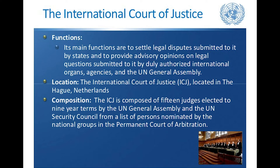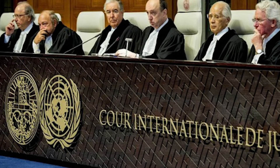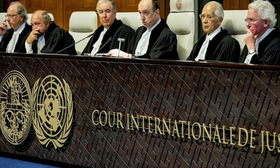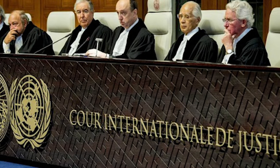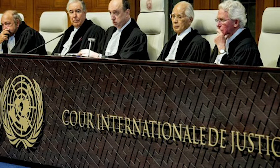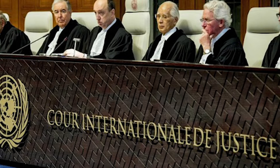The International Court of Justice sits at the Hague in the Netherlands and not at the UN headquarters in New York. Its 15 judges are chosen jointly by the Security Council and the General Assembly, with a third of them retiring every three years.